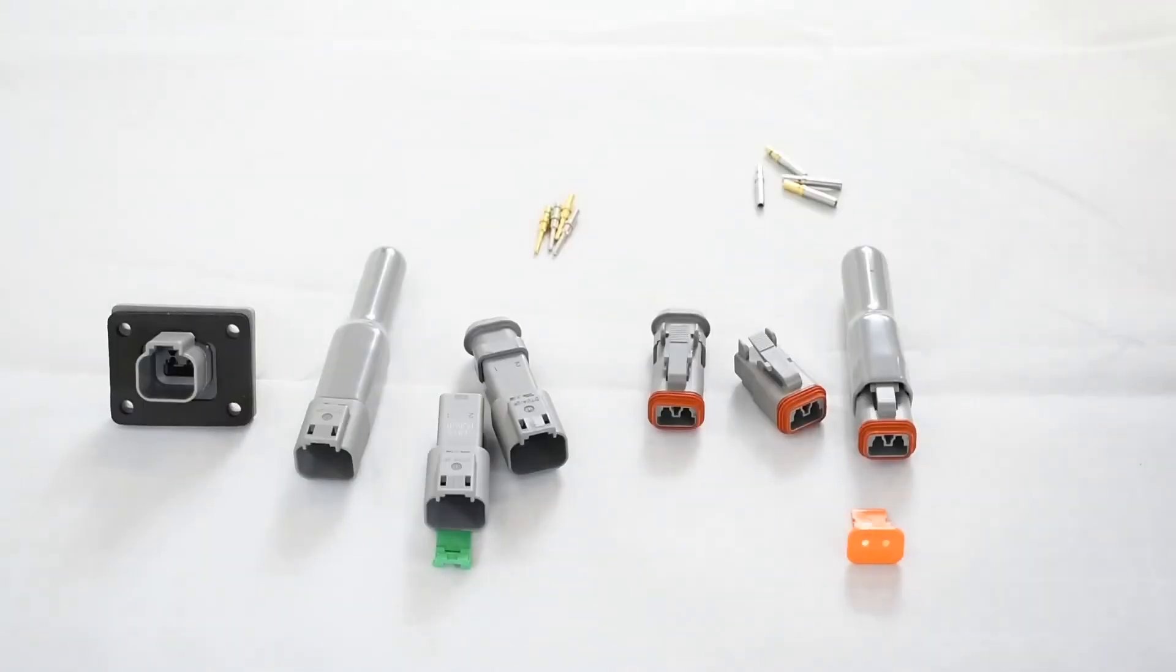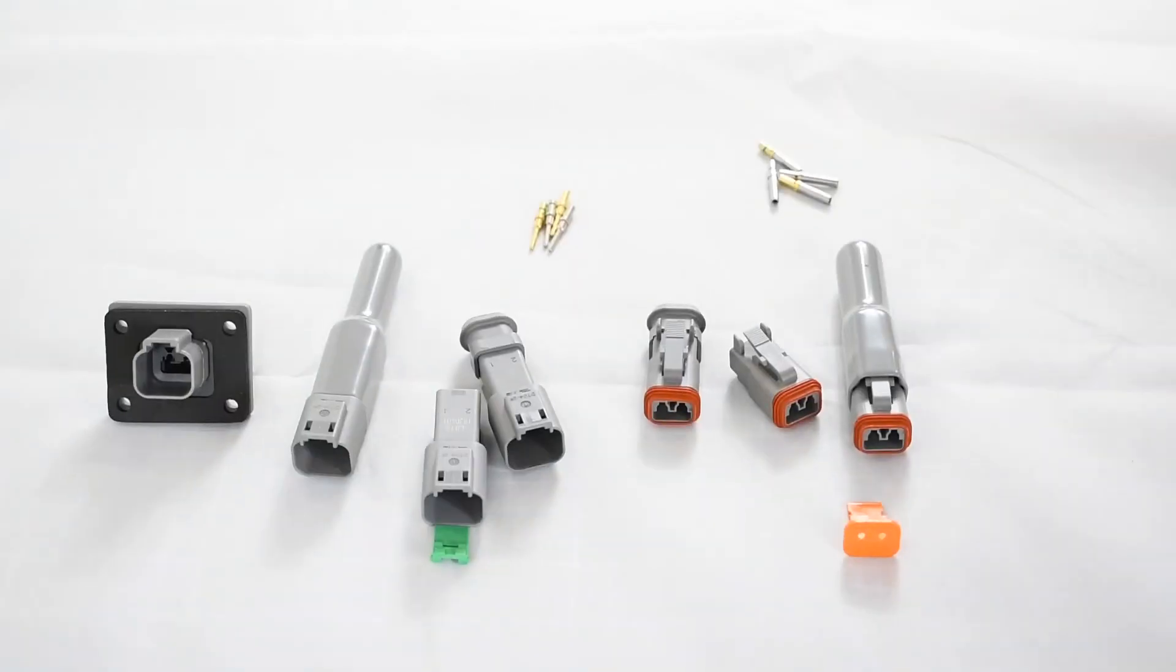So the full range of DT connectors by TE Connectivity are actually available on our website. So that includes the CAT spec, which is the black shell. We have all of the cavity types, so the 2, 3, 4, 6, 8, and 12-Way. Including all the grab kits.